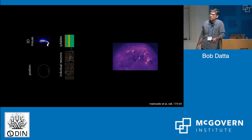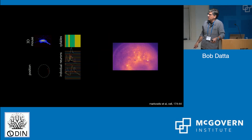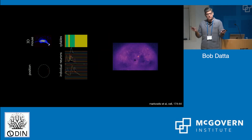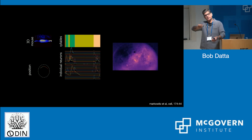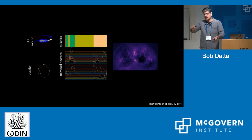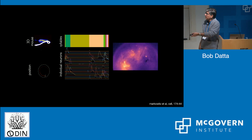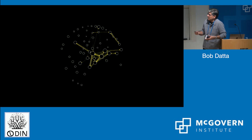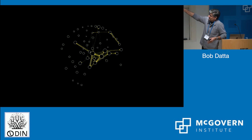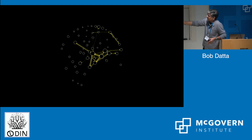If we lesion the dorsolateral striatum, what we find is that all the syllables are expressed normally, but the order in which they occur is totally disrupted. That has focused our attention on DLS. It's clear that the dorsolateral striatum plays an important role in, at least in the rodent, assembling this kind of behavioral structure.